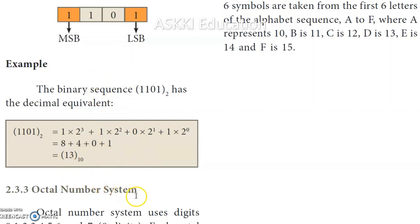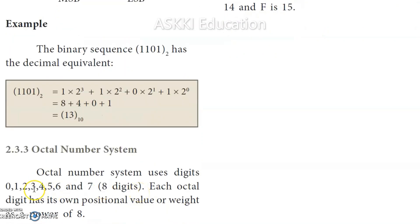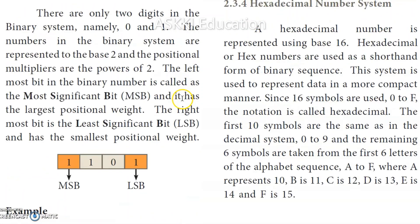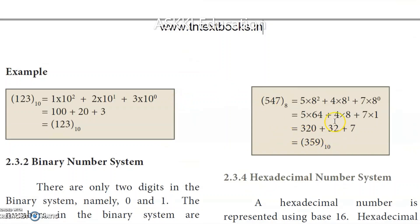For the octal number system, the base is 8, so each digit is multiplied by 8 raised to the power of its position, starting from the rightmost position as 8^0. Using corresponding positional values, we get the decimal equivalent — for example, a given octal number converts to 359 in base 10.